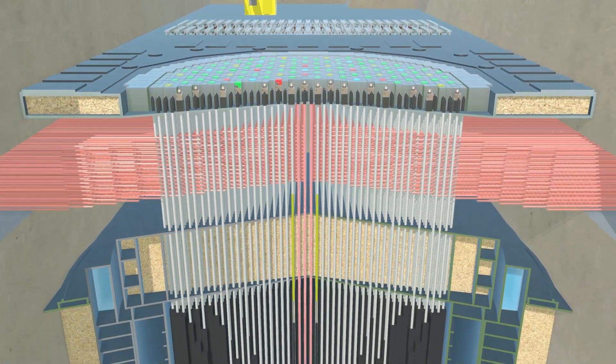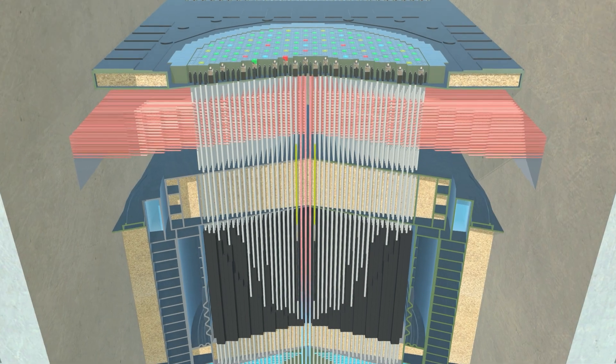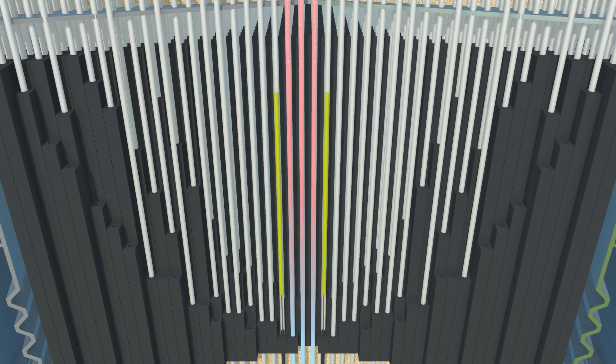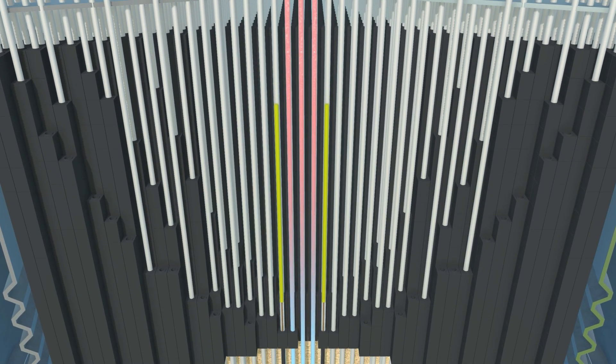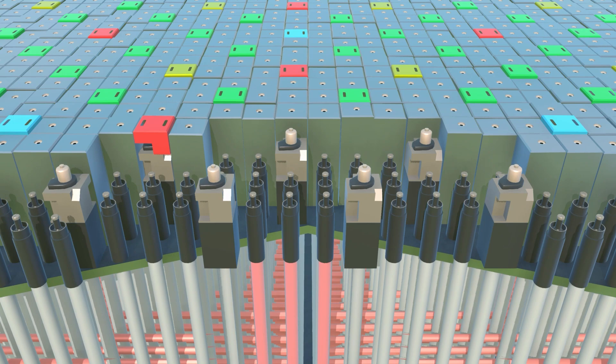Instead of some of the fuel channels, there are channels in the reactor in which the boron-containing control rods move. By inserting them into the core, the amount of neutrons is regulated. The control rod drives are located above the core in the upper containment structure of the reactor hull.